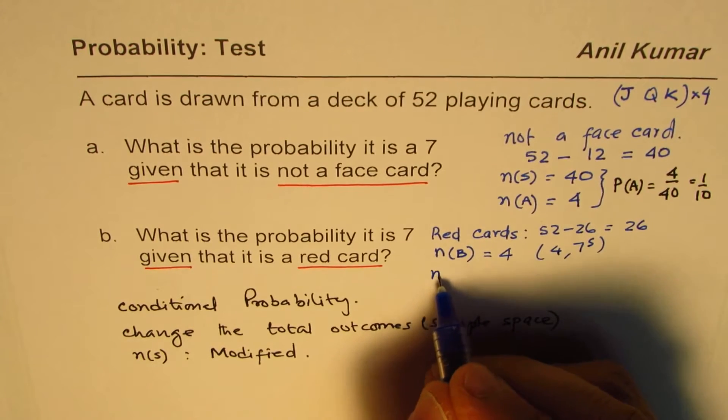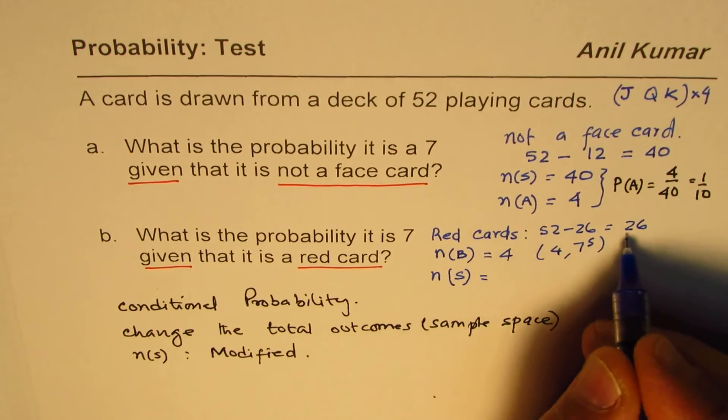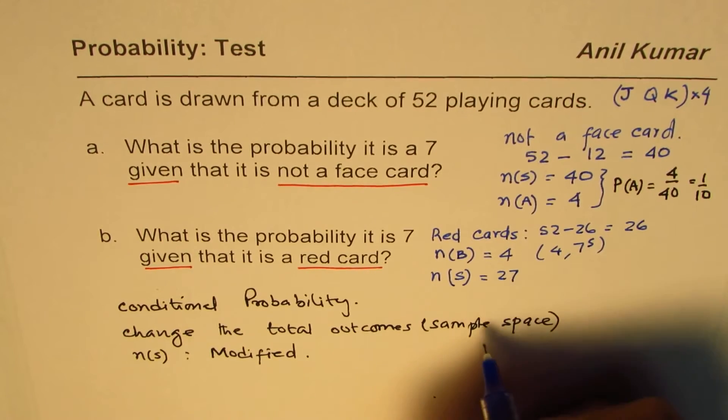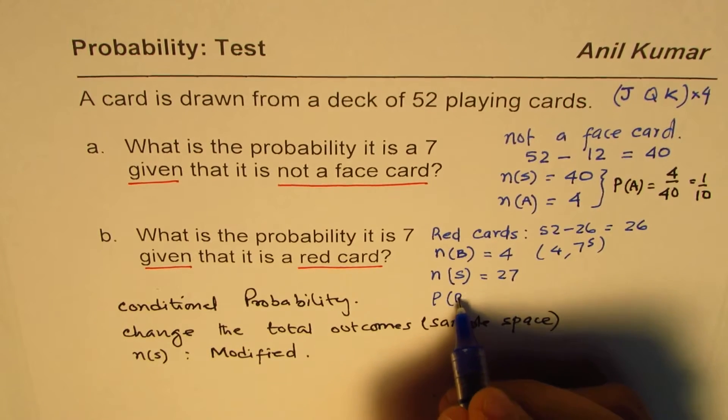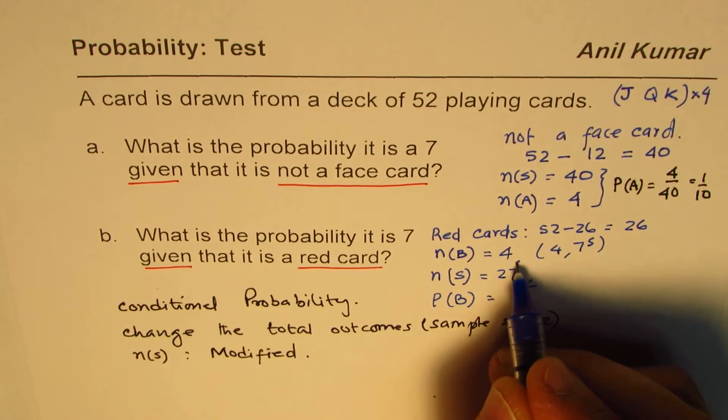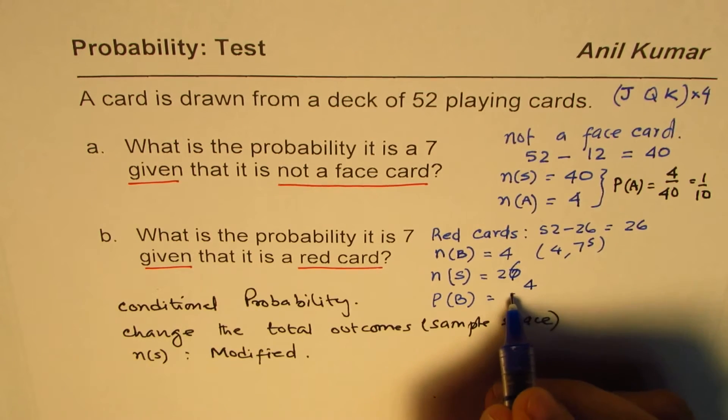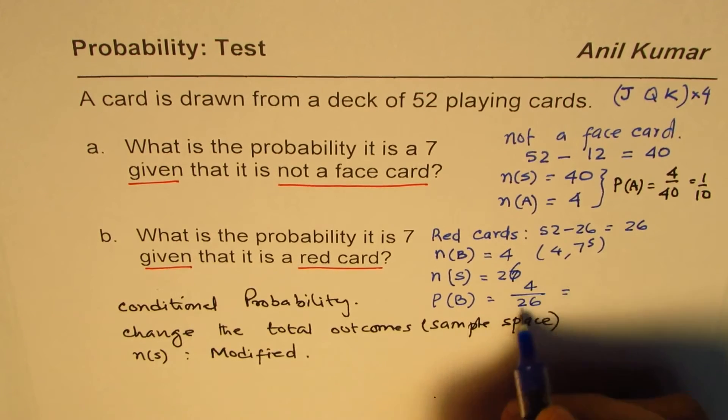And the sample space in this case is 26. Therefore the probability for event B will be 4 over 26, which could be simplified as 2 over 13.